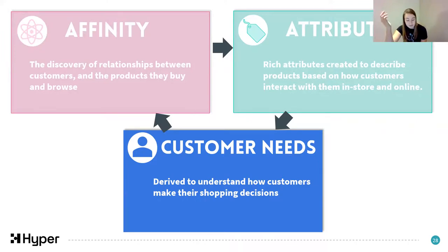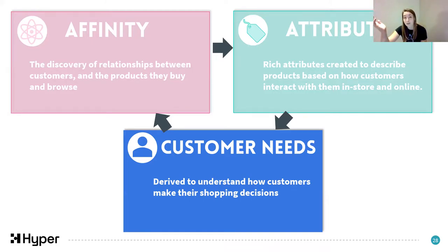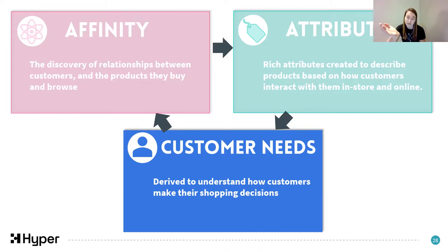Customer need states are really useful because if you group your whole product range in this way, you're actually viewing the product range through the eyes of the customer - almost mimicking the decisions the customer is going to make as they travel through your store or do their online shop. This differs from how products are often grouped in a trading mindset, meaning decisions based on trading groupings are less likely to be customer-centric.